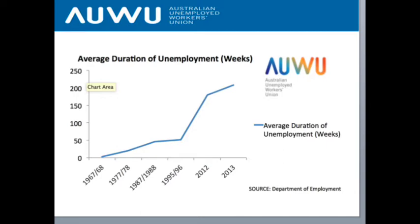The second graph gives the historical perspective on the average duration of unemployment. This era of long-term unemployment is quite new — it didn't used to be that way. Taken from average duration of people receiving Newstart, it went from roughly a few months in 1967 to around 220 weeks — essentially four and a half years — as of 2013, and has likely gotten worse since then.